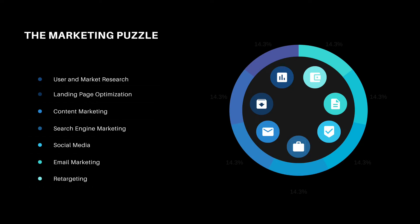Next, let's look at the marketing puzzle. There are many elements of marketing. A few we're going to cover during this video are market research, landing pages or websites, creating content, why you should care about search engines, social media, and email marketing. All of these are really important and they make up the marketing puzzle — the different ways that you can get in front of your audience.